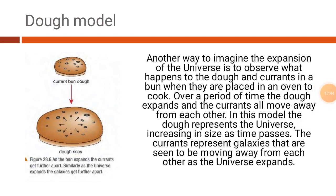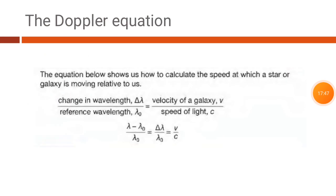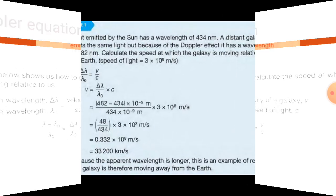You must understand and know all these things. This is the Doppler equation — you will mostly get problems based on this. You will be asked to find the speed of the star. The formula is: change in wavelength over reference wavelength equals velocity of a galaxy divided by the speed of light. Note it down: delta lambda over lambda-naught equals v over c.